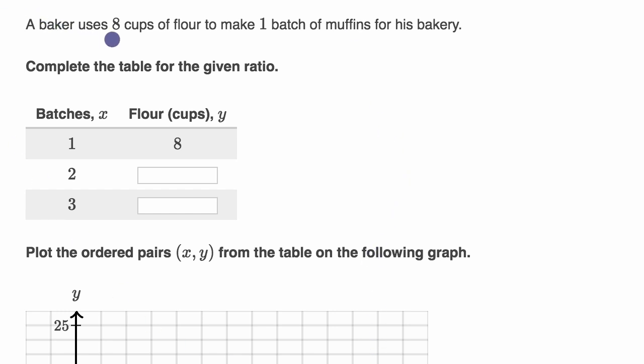We are told that a baker uses 8 cups of flour to make 1 batch of muffins for his bakery. Complete the table for the given ratio.